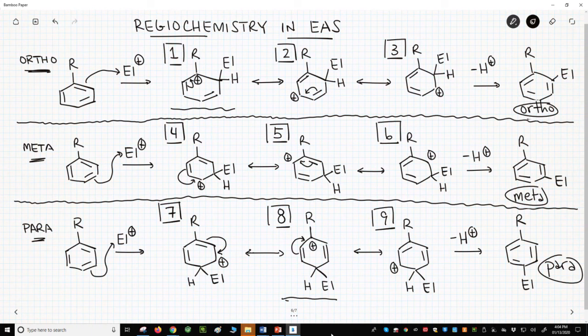Structure number one is part of the ortho pathway. Structure eight is from the para pathway. Let's flip the page and focus on just these two intermediate structures.